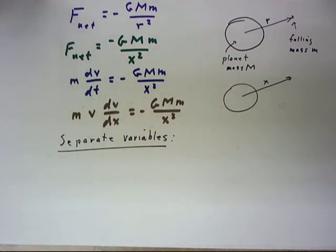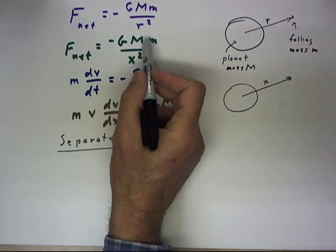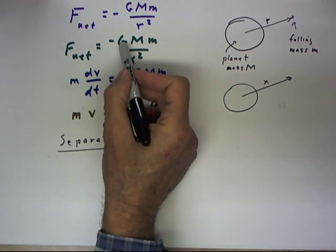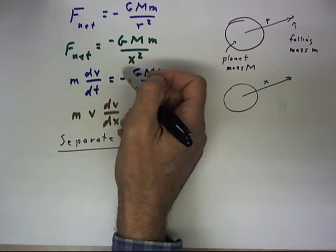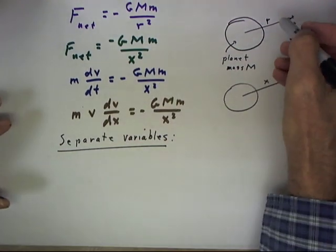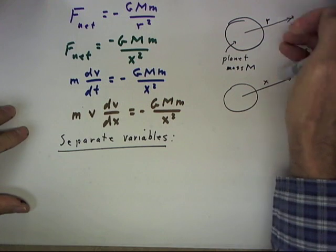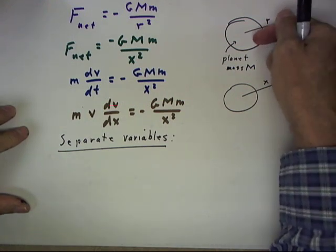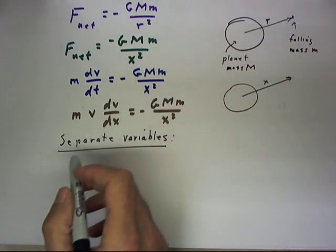So our net force function is this: capital G is the universal gravitational constant. The negative is because if we're at a positive distance, our net force is going to be toward the planet in the negative direction.